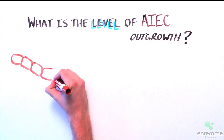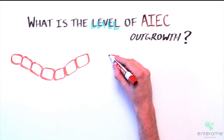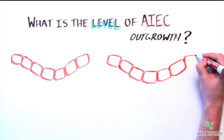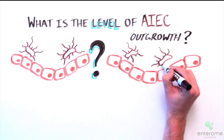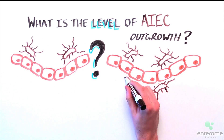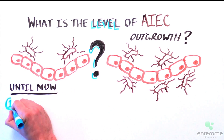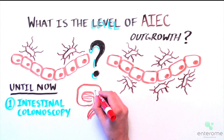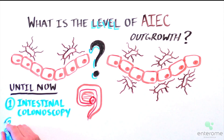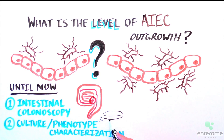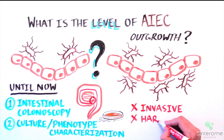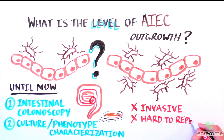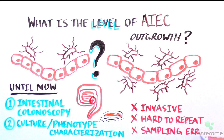In order to combat AIEC, we also need an effective way to measure the level of AIEC outgrowth in Crohn's disease patients. Until now, an intestinal biopsy performed by colonoscopy, followed by an AIEC culture for characterization of phenotype, was performed. However, this procedure cannot be routinely performed because it's invasive, hard to repeat, and prone to sampling error.